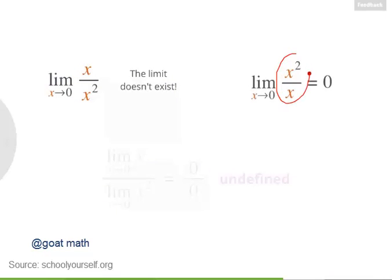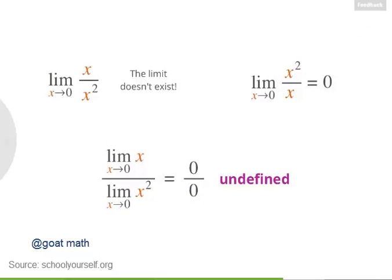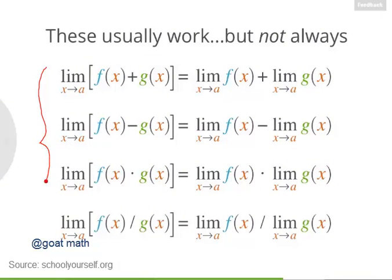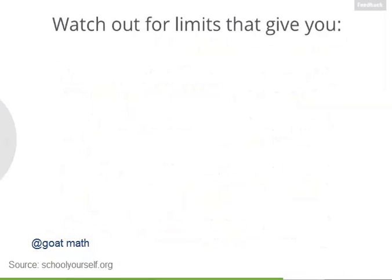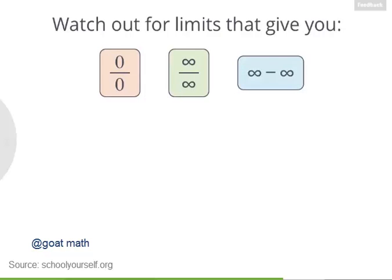So the limit as x approaches 0 of x over x squared does not exist, while the limit of x squared over x equals 0. In both cases, splitting the limits up was not helpful, giving us 0 over 0 which was undefined. So as we said, these rules for splitting limits when adding, subtracting, multiplying, and dividing usually work, but not always. Watch out for limits that when split give you 0 over 0, infinity over infinity, or infinity minus infinity.